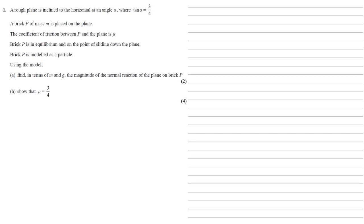Using the model for part A, we need to find, in terms of m and g, the magnitude of the normal reaction of the plane on brick P. So as always, let's start with our diagram. Here's the slope. We've got the brick P on there. We've got our force coming straight downwards, which is our force due to gravity, which is mass m times by g. We'll have the reaction force, which is perpendicularly upwards away from the slope. I'm going to call that one R.